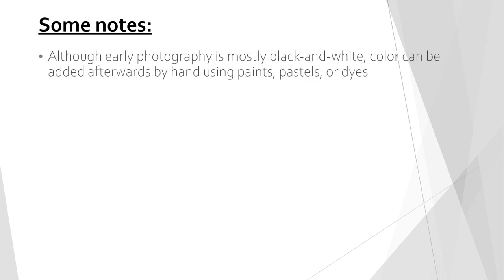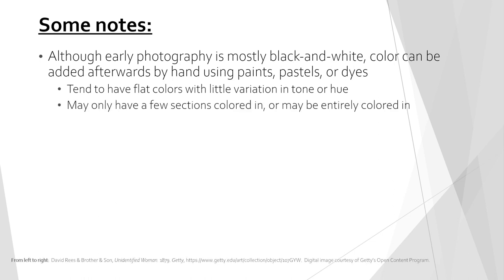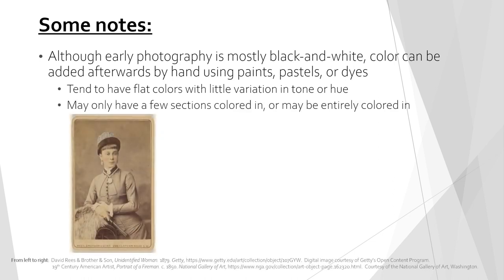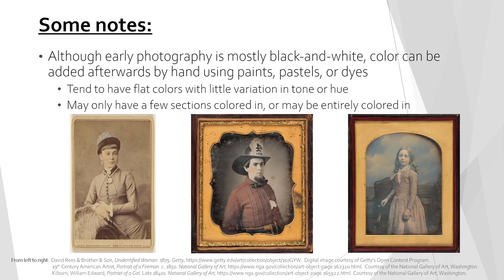Although many early photograph types only produce images in monochrome black and white, color can be added afterwards by hand using paints, pastels, or dyes. Therefore, it is possible to have a colored photograph before color photography was invented. Hand color photographs tend to have flat colors with little variation in tone or hue. The image may only have a few sections colored in such as blush, jewelry, or a piece of clothing, or the image can be entirely colored in.